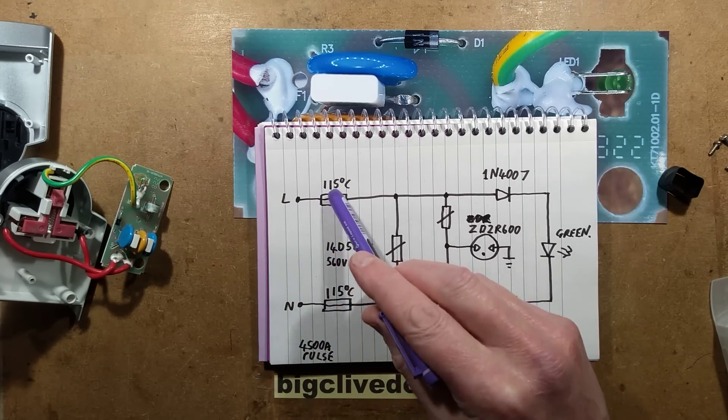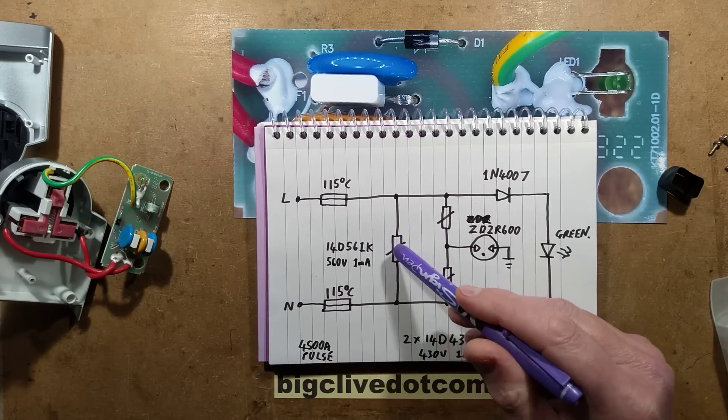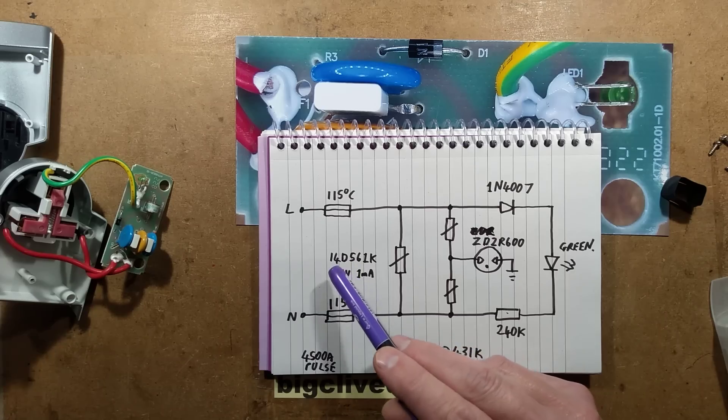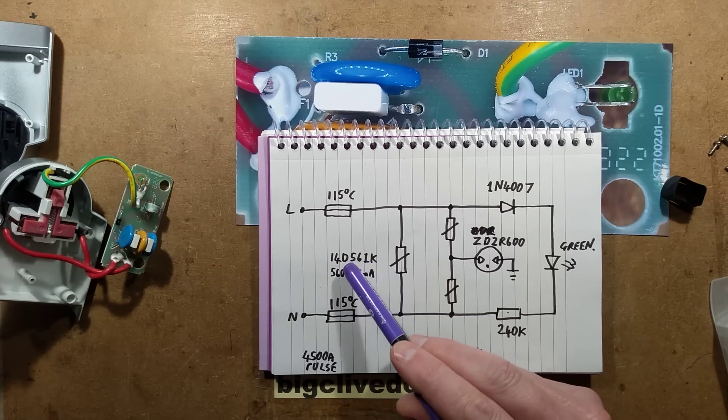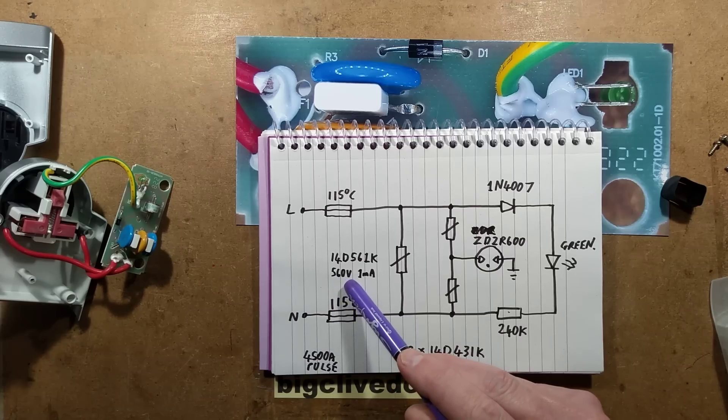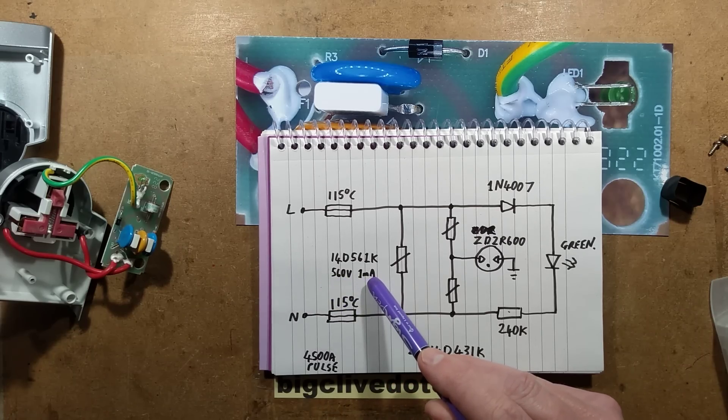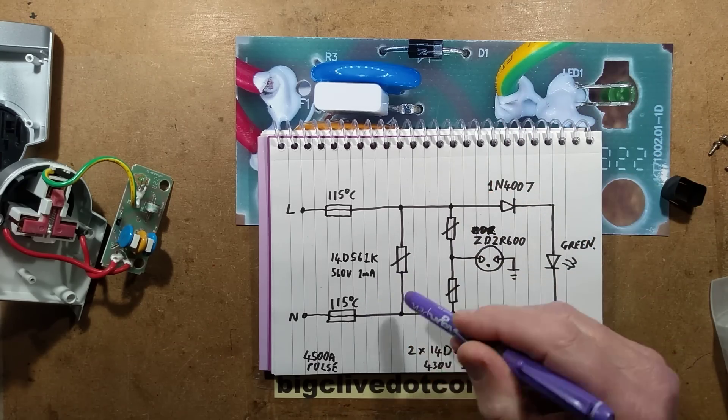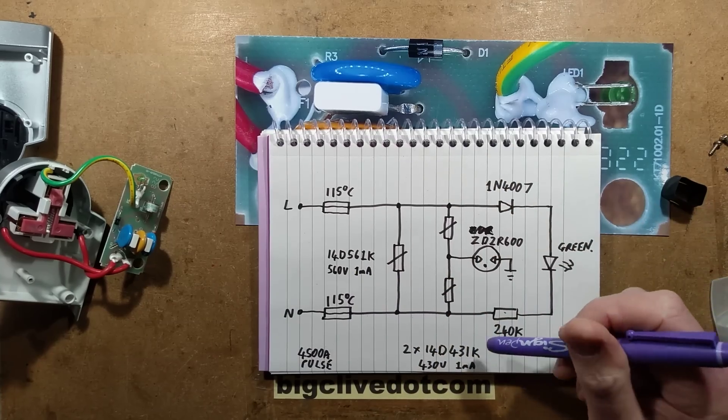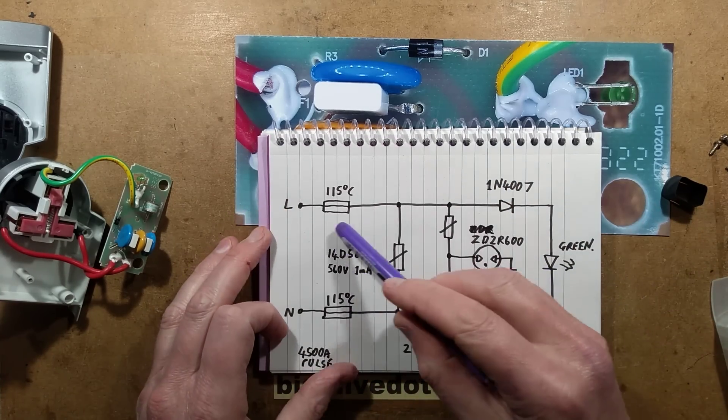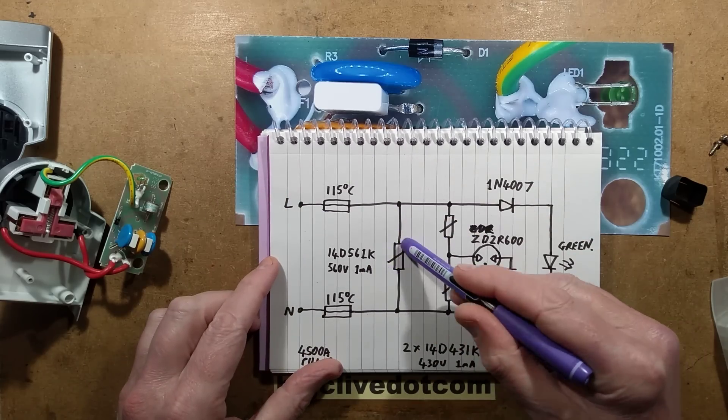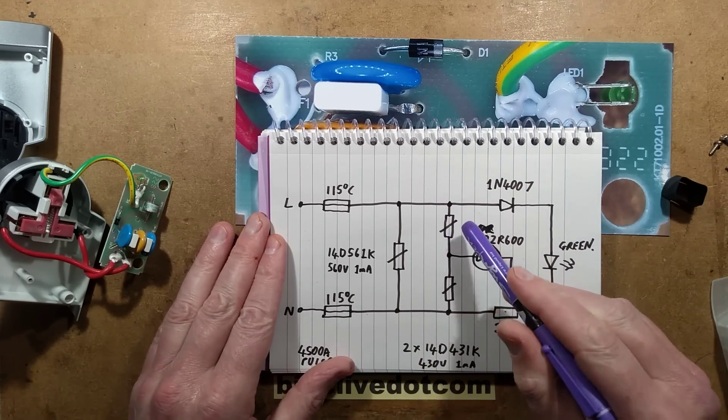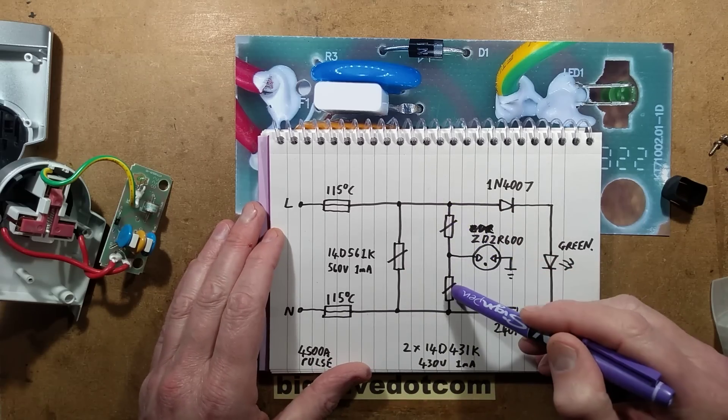So we've got the live and neutral coming through those fuses, it hits the big orangey yellowish type one in the middle which is a 14D 561k. What that means is 14mm diameter is the 14D, and the 561k, 56 with 1 as a multiplier, 560 volts, and that's the voltage at which that will be passing 1mA of current. So it will start turning on before that but that's the point that they standardize that the voltage is going to be, the point at which it is passing that 1mA, so it seems to be a standard measurement reference. So the idea is that if there is a voltage transient, this resistor will effectively shunt that, it will lower in resistance and clamp that down.